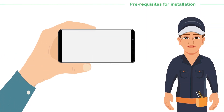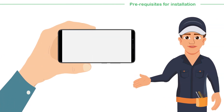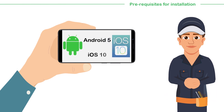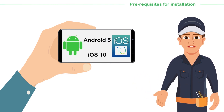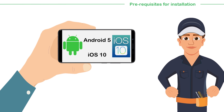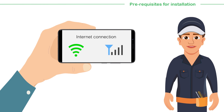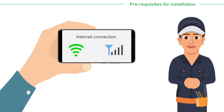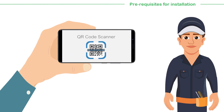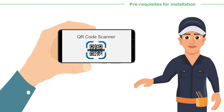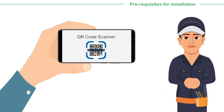To download and install the PowerDeviceApp, you need to have an Android or iOS smartphone with a minimum of Android 5 or iOS 10 installed. Your phone should have an internet connection to access and download the MasterPact MTZ smart app from the Google Play Store. Lastly, your phone should have a QR code scanner to scan the code on the MicroLogic X device to download the MasterPact MTZ smart app.